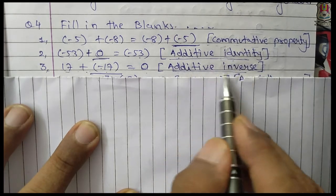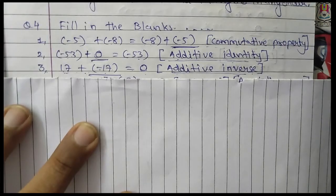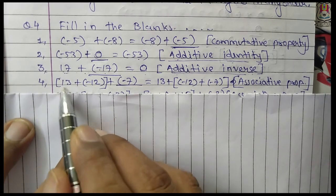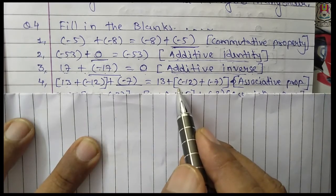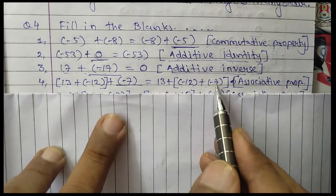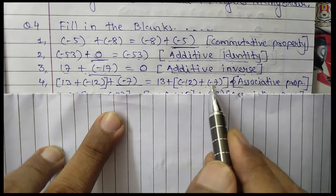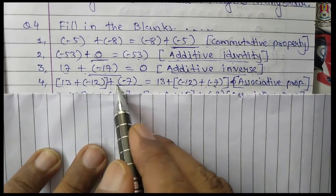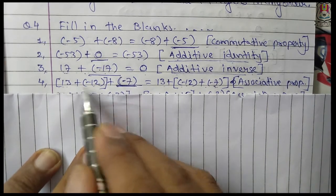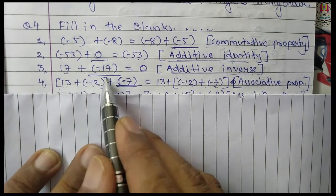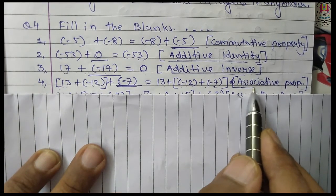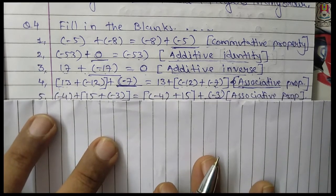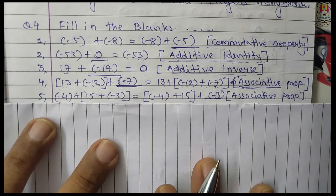Note the difference: number 2 used additive identity and number 3 used additive inverse. Number 4: you can see two integers are grouped in one bracket and the last two integers are grouped in another bracket, both giving the answer minus 7. When we group integers differently, this is called the associative property — as explained in the introduction video of this chapter.